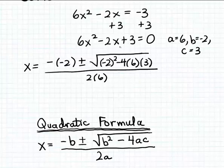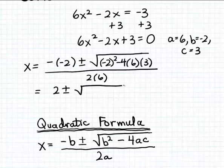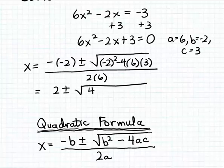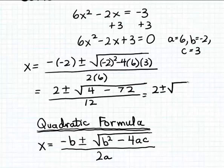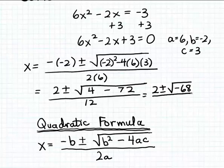There are the two solutions, but we want to simplify this. Minus of negative 2 is plus 2, and then plus or minus the square root of: negative 2 squared is 4, minus 4 times 6 is negative 24, and negative 24 times positive 3 is negative 72. All divided by 12. So we get 2 plus or minus the square root of negative 68, since 4 minus 72 is minus 68, all divided by 12.